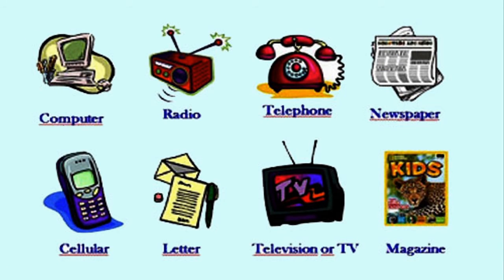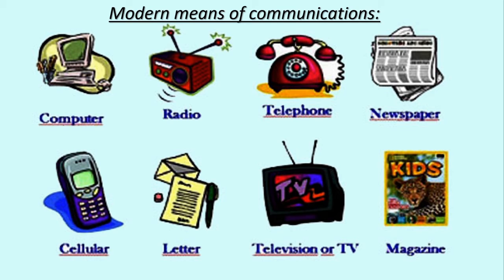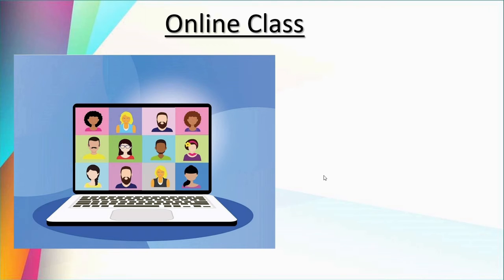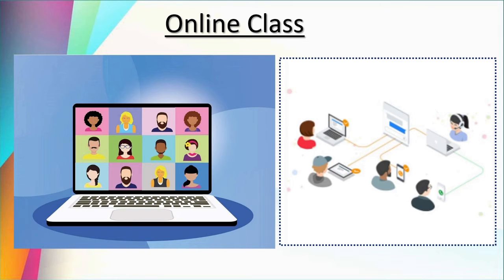Here we can see some modern means of communication — computers, radio, telephone, mobile, TV, etc. These are the fastest means of communication compared to newspapers, letters, and magazines. Nowadays, because of the coronavirus pandemic, we are always going through online classes — schools are closed but studies continue online. The teacher takes online classes daily, and this is the fastest and most advanced means of communication.